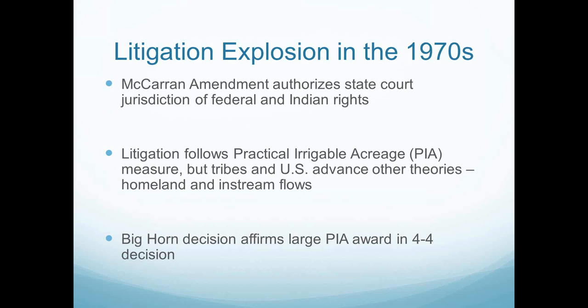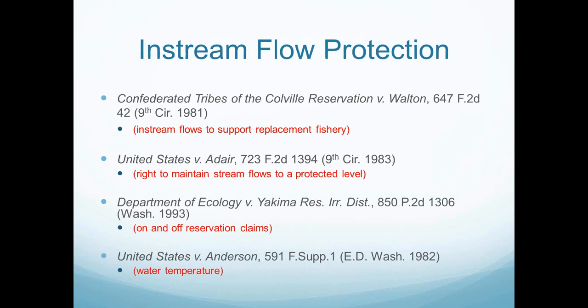The PIA standard serves as a standard for agricultural reservations, and most tribes have some agricultural purpose behind their reservation. But tribes with treaty reservations for fishing, or a history of fishing, are also entitled to in-stream flow protection for those fishery resources. Several cases — two from the Ninth Circuit involving the Colville Reservation, and the Adair case involving the Klamath Reservation — both recognized tribal rights to in-stream flows for fisheries habitat protection, with a time immemorial priority date. The Washington Supreme Court has also recognized on- and off-reservation claims for in-stream flows in the Yakima adjudication. U.S. v. Anderson, a district court decision, recognized a habitat protection right in a water quality context — the right to keep the water at a temperature cool enough to support fisheries populations.